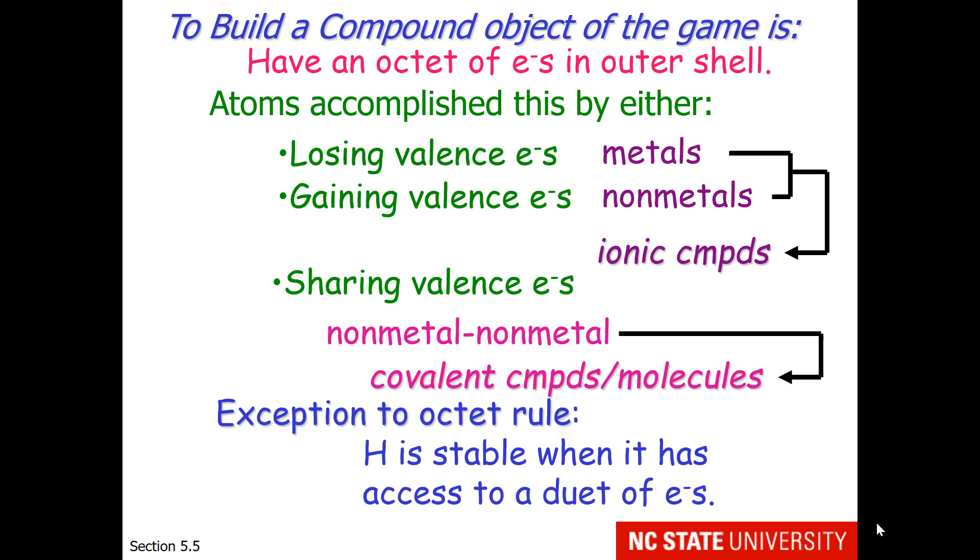There is one exception to the octet rule. Hydrogen's nearest noble gas is helium, which has two electrons around it. So hydrogen is stable when it has access to a duet of electrons, meaning two.